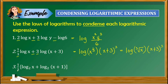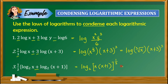Item number 3: one-half times the quantity [logarithm of x with base 2 plus logarithm of (x plus 1) with base 2]. We have addition inside the bracket, so we write it as a product: logarithm of x times (x plus 1) with base 2. The 1/2 means both x and (x plus 1) are raised to 1/2, so we rewrite this as logarithm of the square root of x times (x plus 1) with base 2.